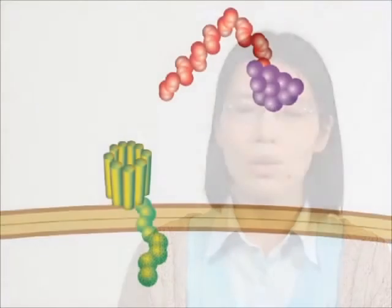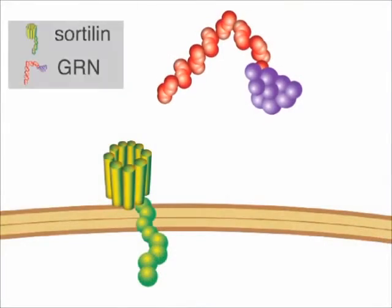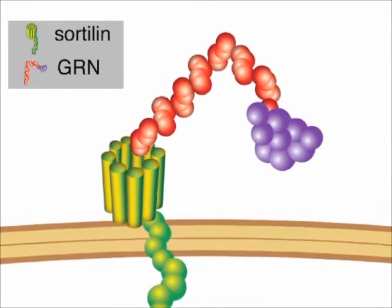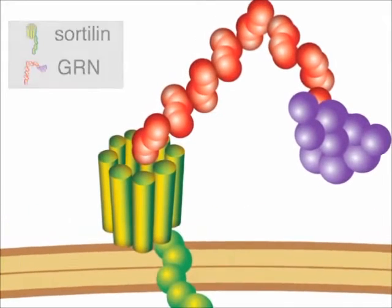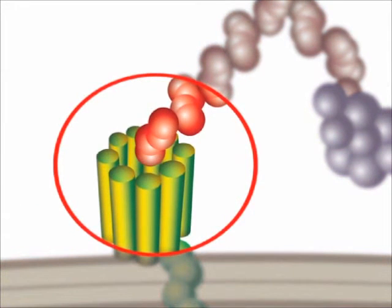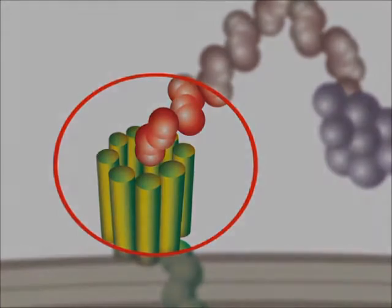Progranulin comprises 7.5 granulin motifs. To determine which part of progranulin is involved in sortilin binding, we made truncation mutants. We found the C-terminal 100 residues of progranulin, which contains granulin E and the flanking region, are fully sufficient for binding to sortilin.